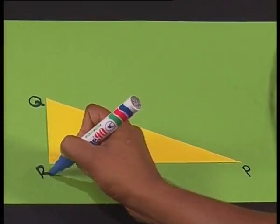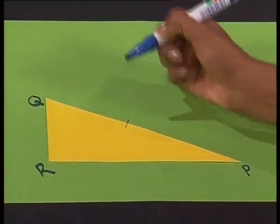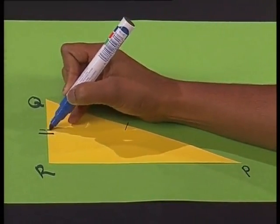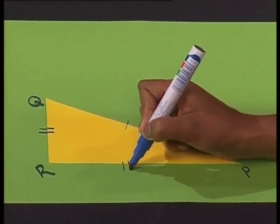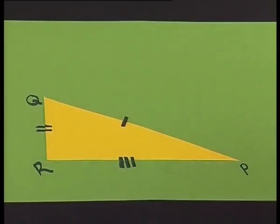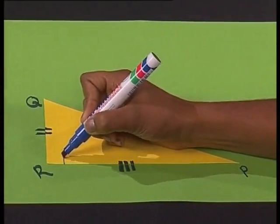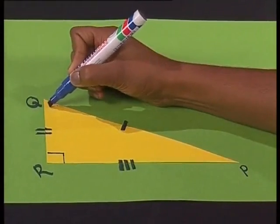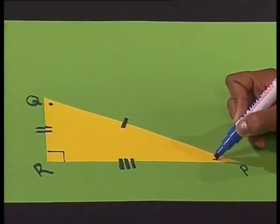To get our rectangle we're going to make use of a right-angled scalene triangle. Let's label it P, Q and R. Now let's mark in all the information we know about triangle PQR. Let's mark each side differently to show that they are all of different lengths. We know that the angle at R is 90 degrees, and we can mark angle Q and P differently because they are not equal.